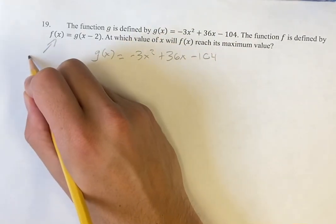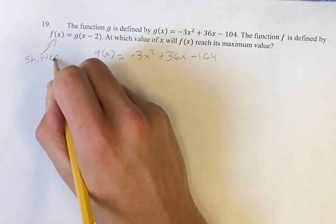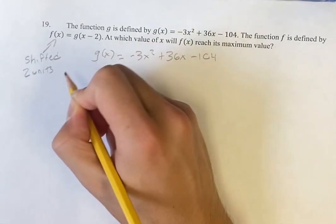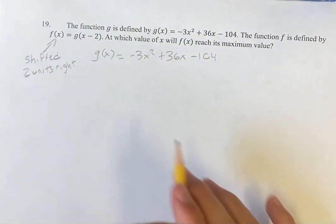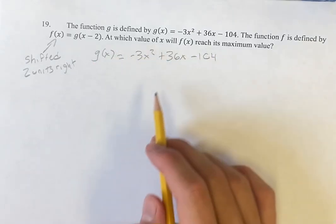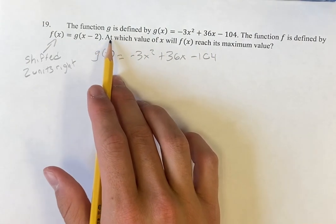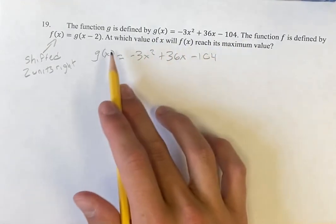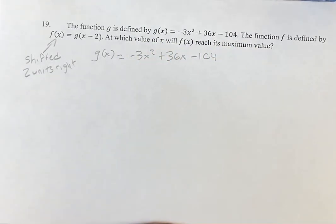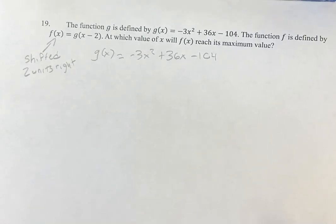That means that this is going to be shifted two units to the right. Alright, but we don't have to worry about that right now. Let's just find the vertex, which is, I should say, we're being asked at which value of x will f(x) reach its maximum value. Let's find that for g(x) and then we can just move 2 to the right for f(x). So how do you find it for g(x)?